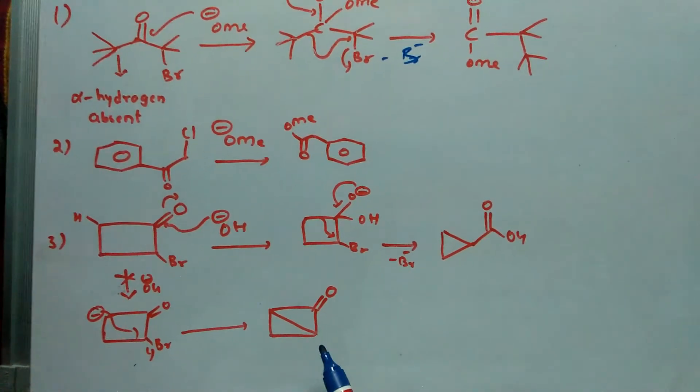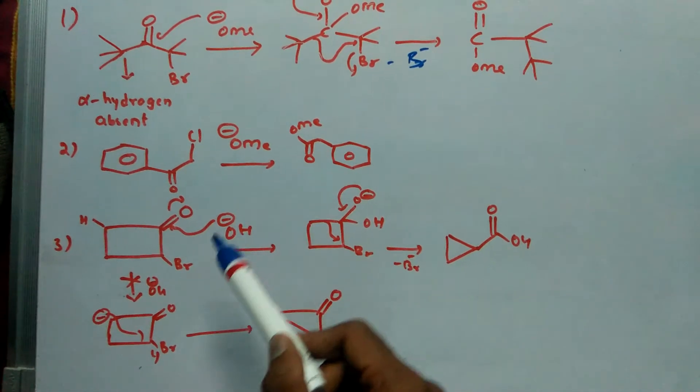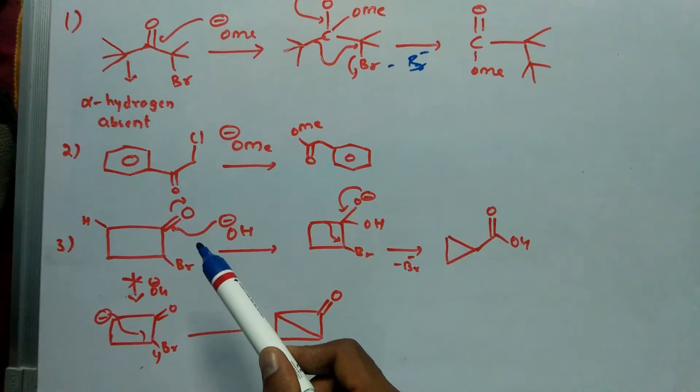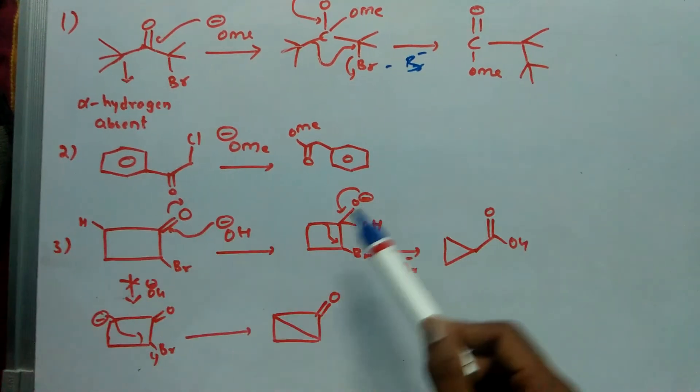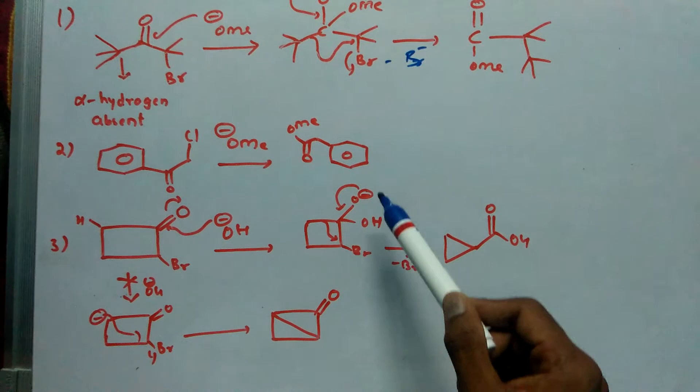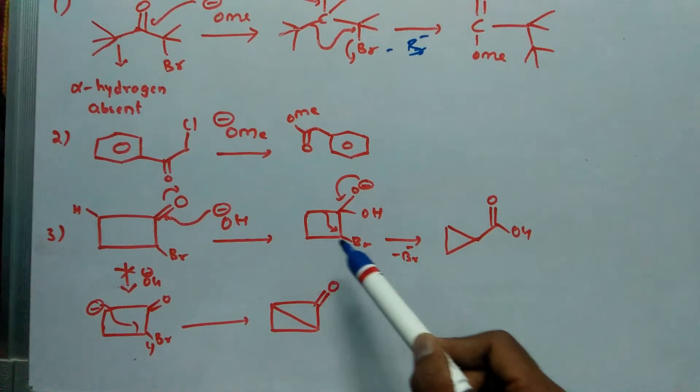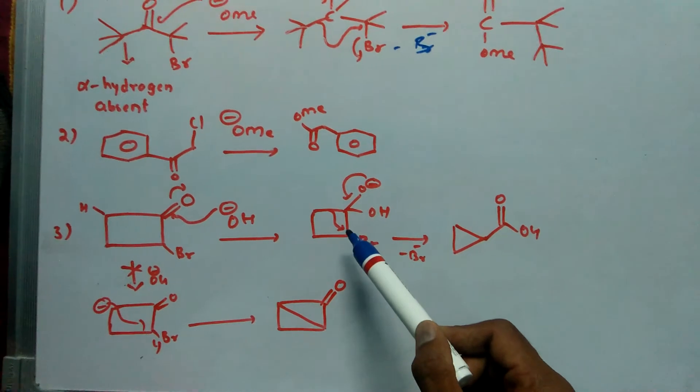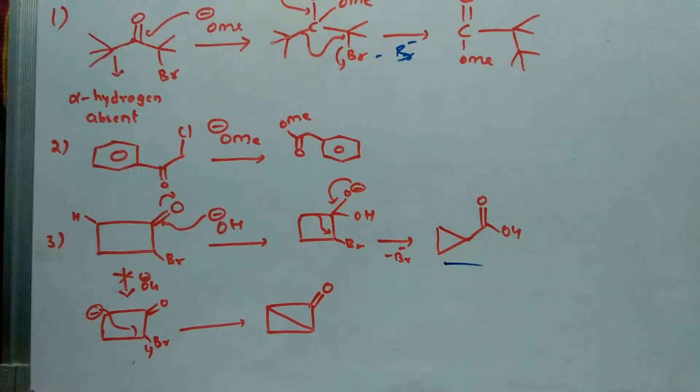So the hydroxide ion attacks the electrophilic carbonyl carbon and it forms like this. This bond will migrate towards this carbon, Br minus is liberated, and this stable compound is formed.